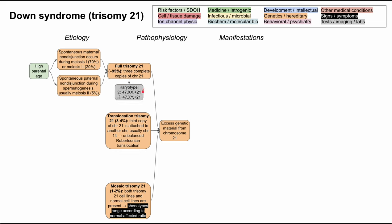That's the most common form — full trisomy 21 — and the karyotype looks like this. They'll have 47 chromosomes instead of 46. In the male case, there'll be XY with an additional chromosome 21. In the female case, there'll be XX with an additional chromosome 21. This is the karyotype for full trisomy 21, the most common form of Down syndrome.